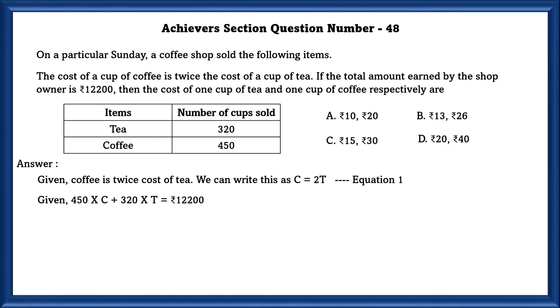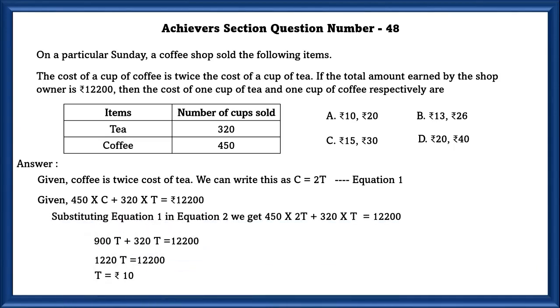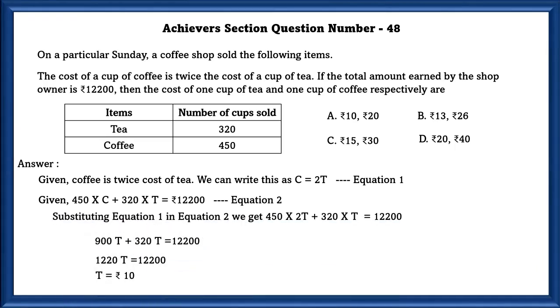Given 450 into C plus 320 into T is equal to 12,200. Substituting equation 1 in equation 2, we get 450 into 2T plus 320 into T, which is equal to 12,200.